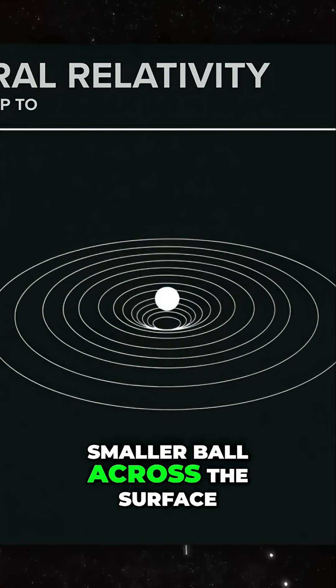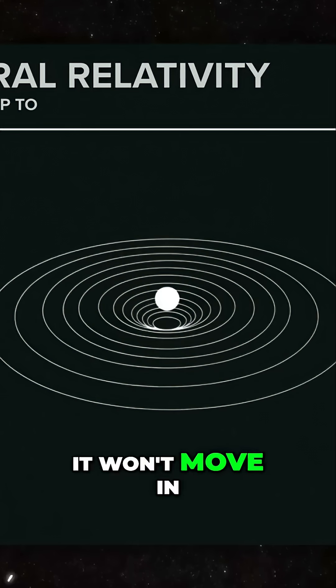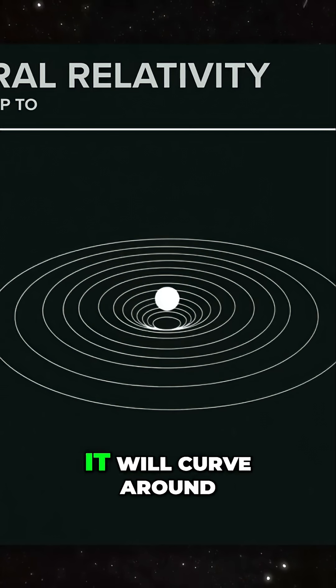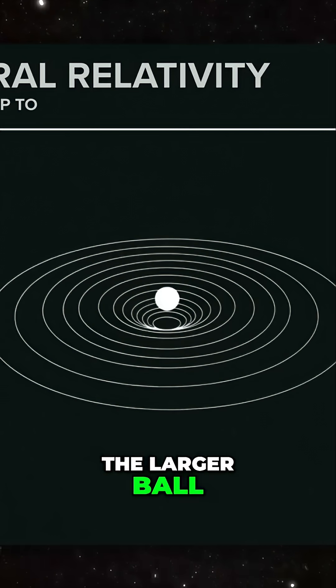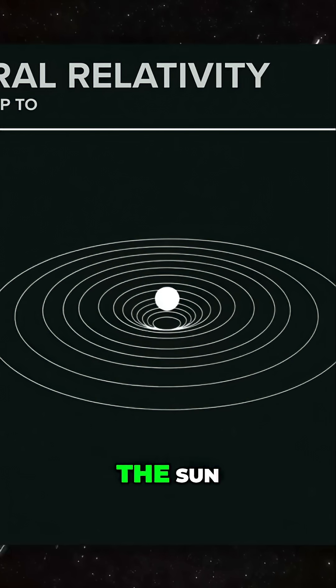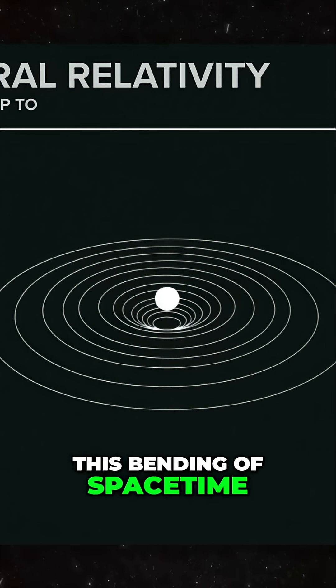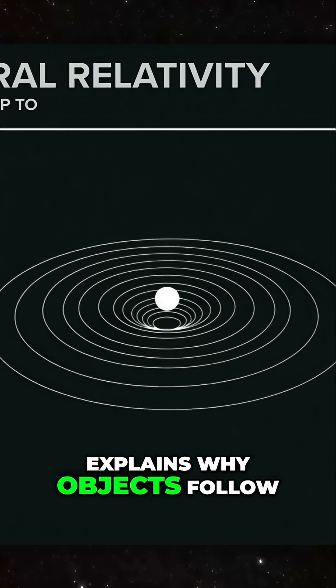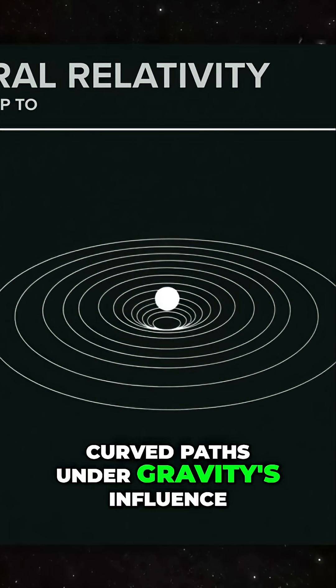Now if you roll a smaller ball across the surface, it won't move in a straight line. It will curve around the larger ball, just like planets orbit the Sun. This bending of spacetime explains why objects follow curved paths under gravity's influence.